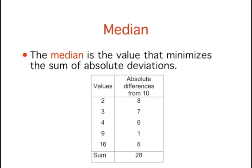The sum of the absolute deviations from the median of 4 is only 19. Of course, the value that minimizes the sum of absolute deviations is also the value that minimizes the average absolute deviation.